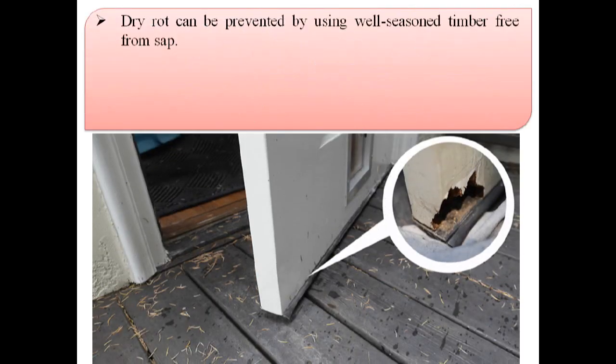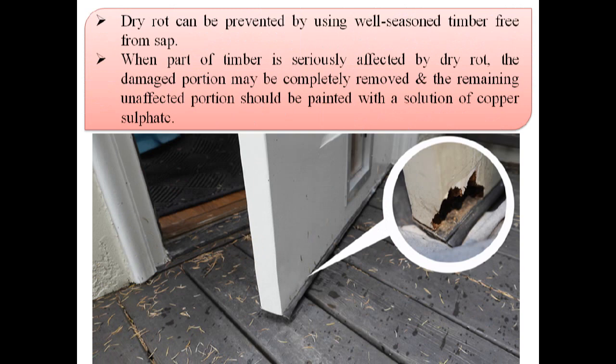Dry rot can be prevented by using well-seasoned timber free from sap. When part of timber is seriously affected by dry rot, the damaged portion may be completely removed and the remaining unaffected portion should be painted with a solution of copper sulphate.